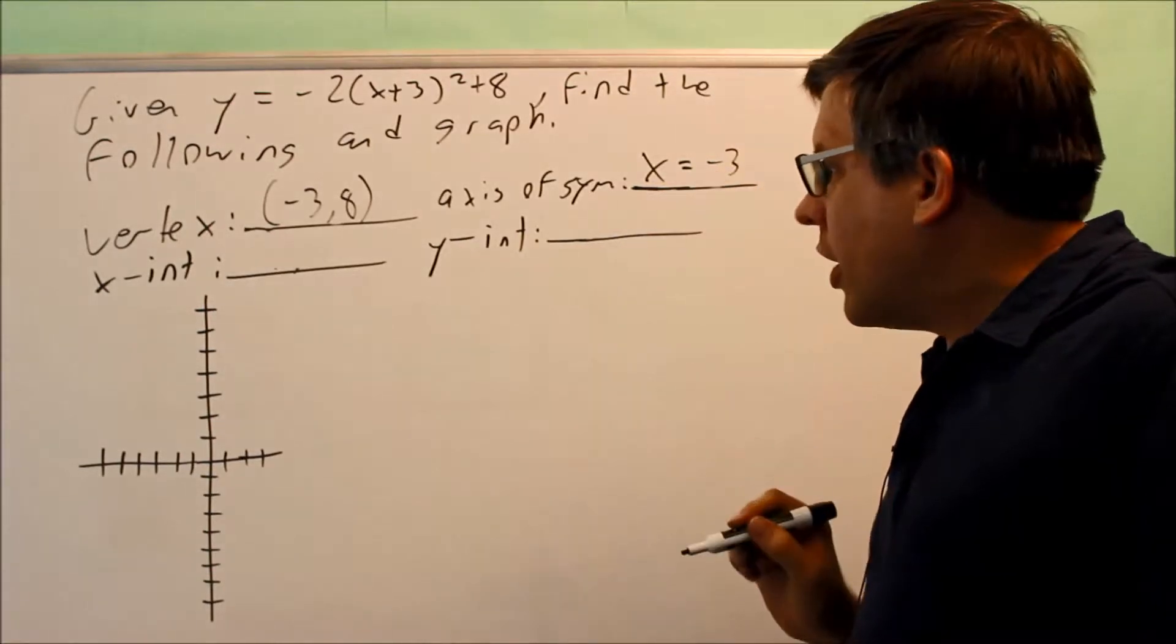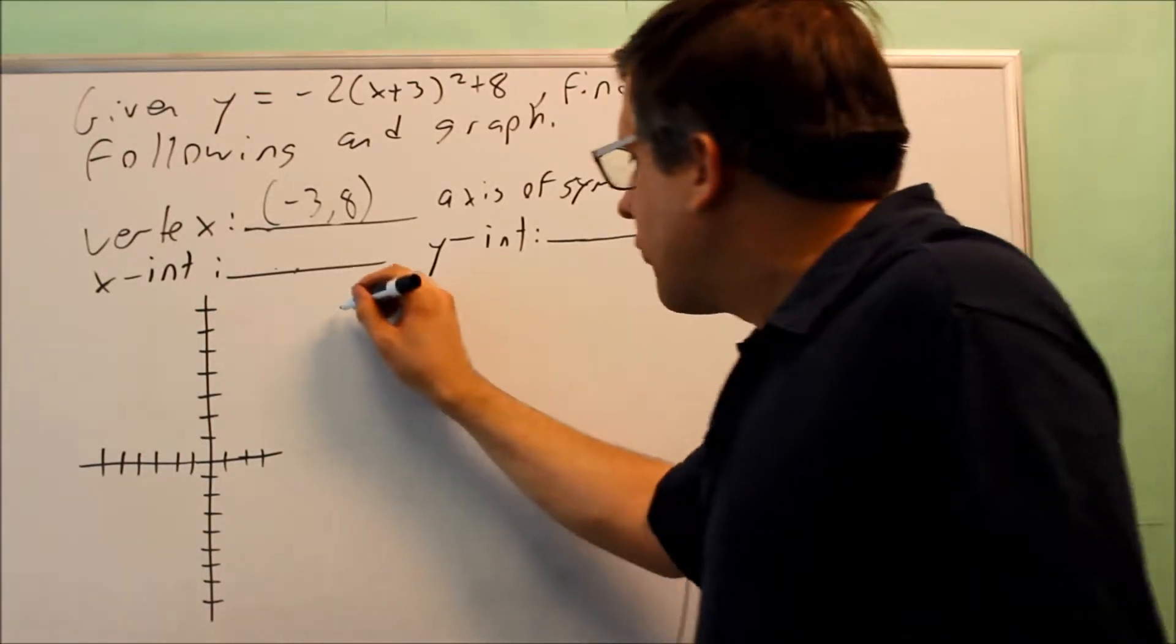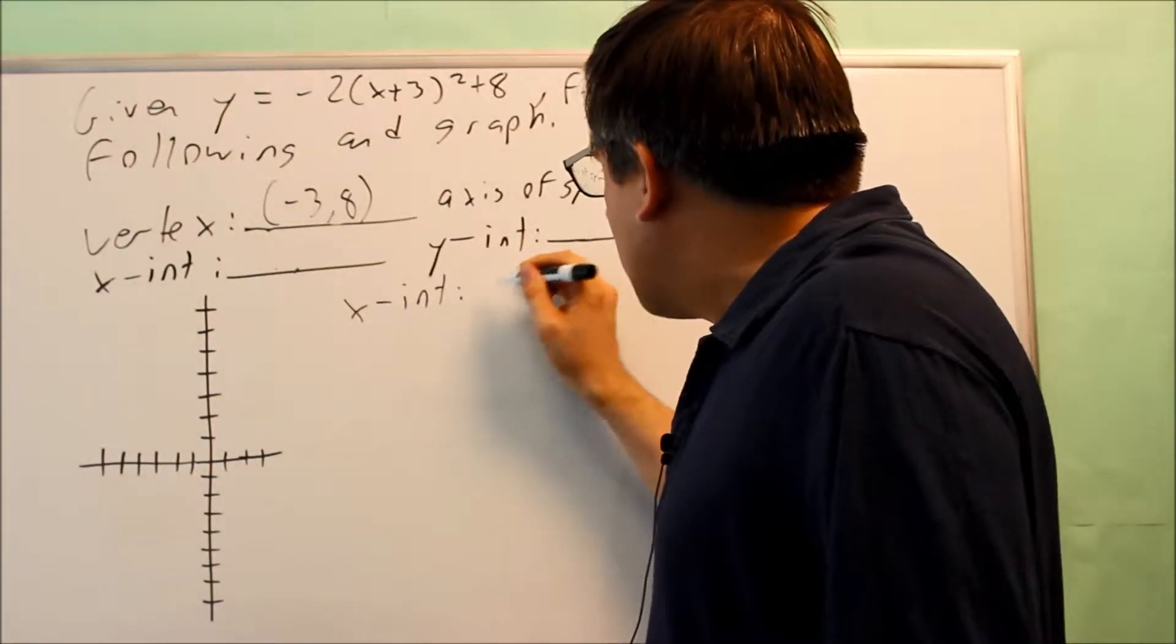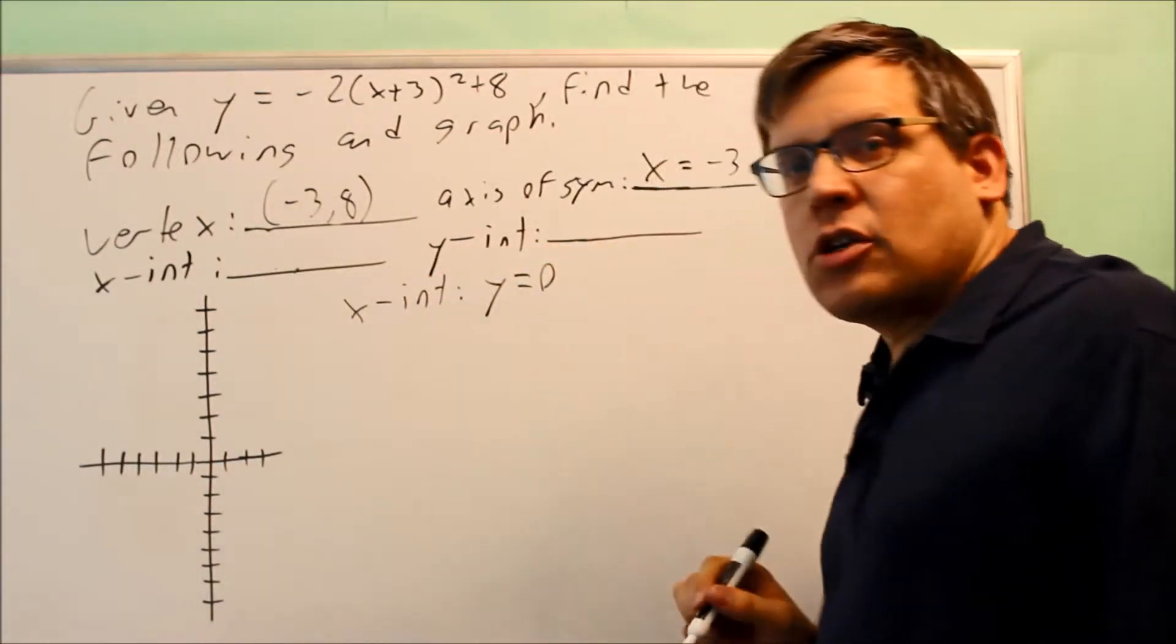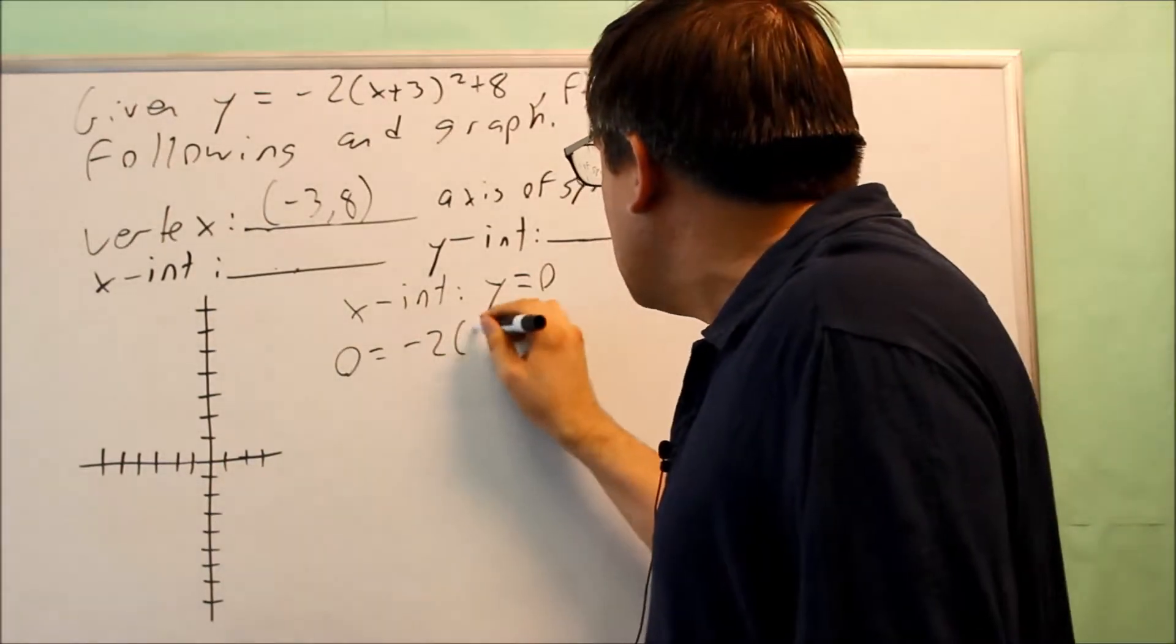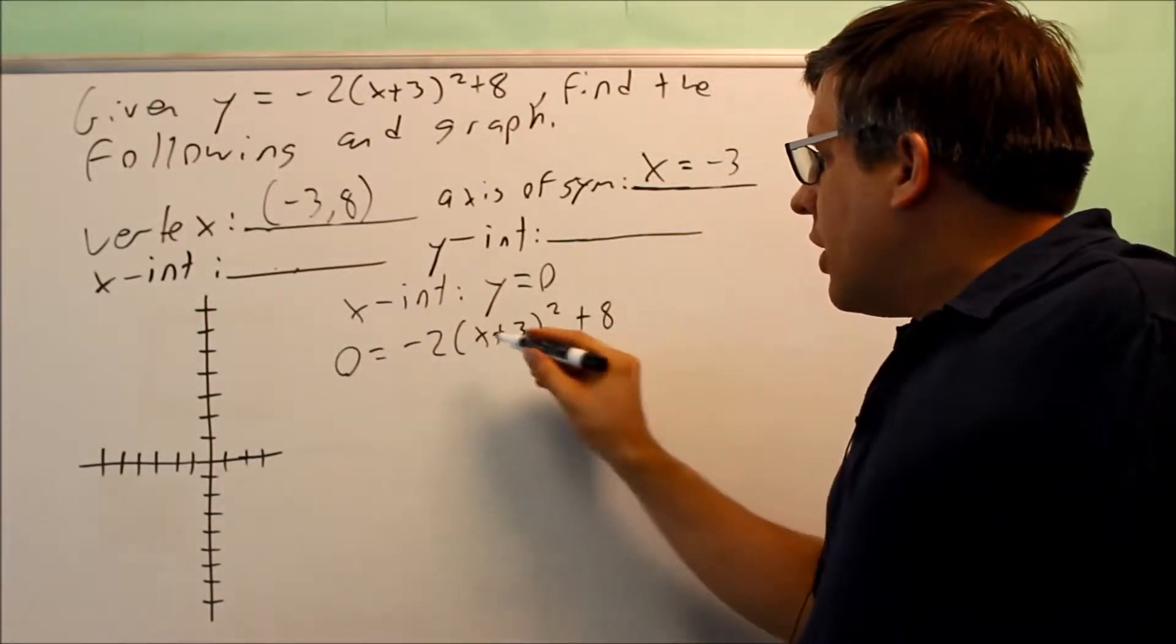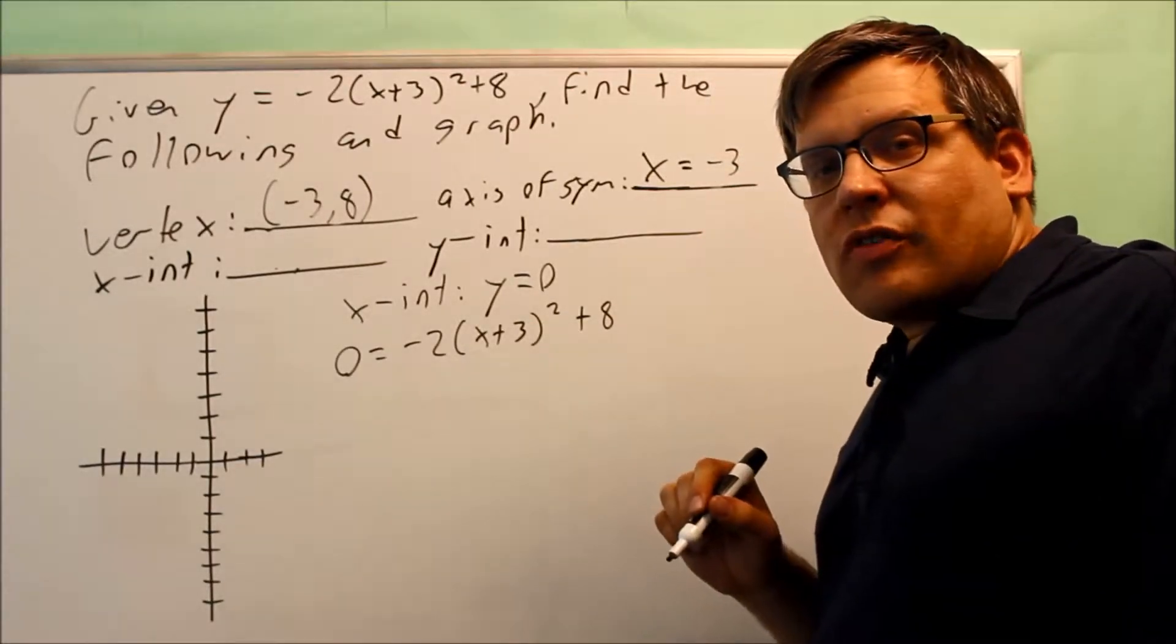We want to find our intercepts, so let's first do x-intercept. The x-intercept is where you make the y equal to 0, and we're going to solve for x. So we get 0 equals negative 2(x plus 3) squared plus 8, and then there's a couple different ways you could solve this.